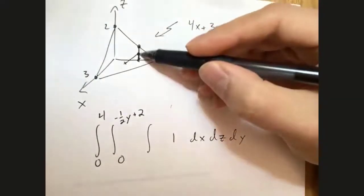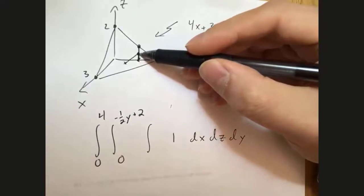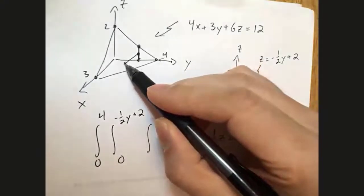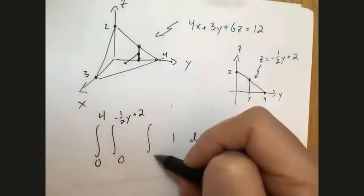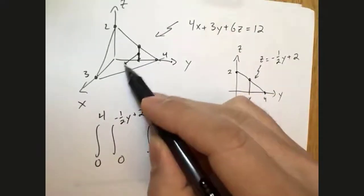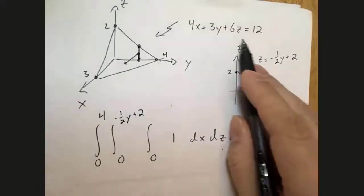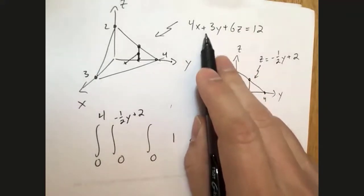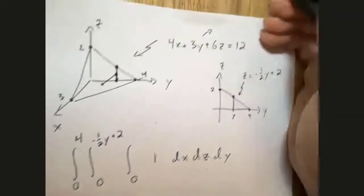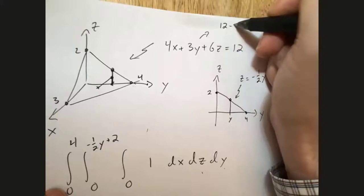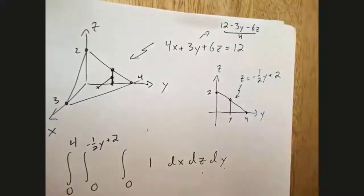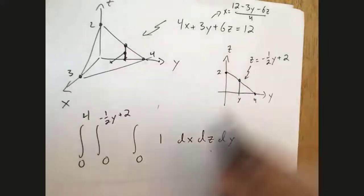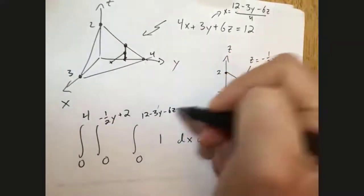Now as I move along that line segment, I've specified both a y and a z. How far do I go out in the x direction? I go from 0 until I hit this surface. That surface is given by this equation, so I want to know how big x gets. Solve this for x: I get 12 minus 3y minus 6z over 4. So x goes from 0 to 12 minus 3y minus 6z over 4. That is an alternative way to set up this integral.